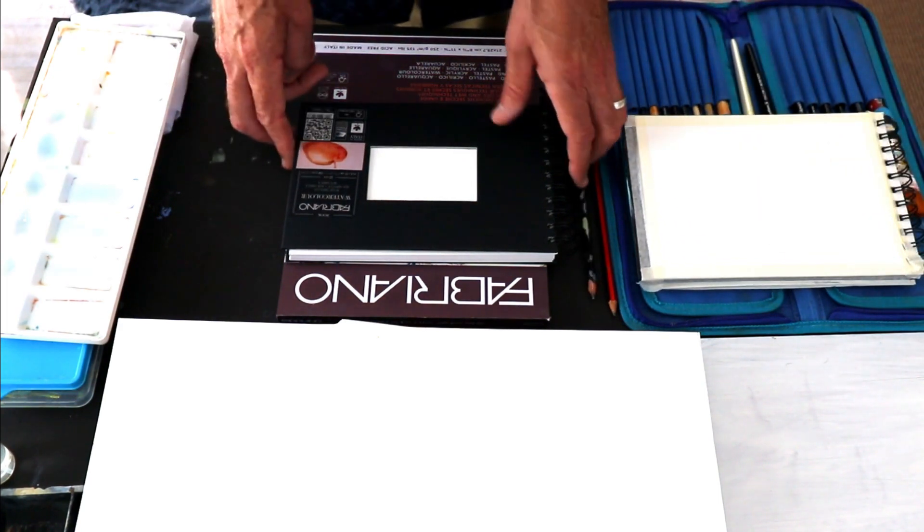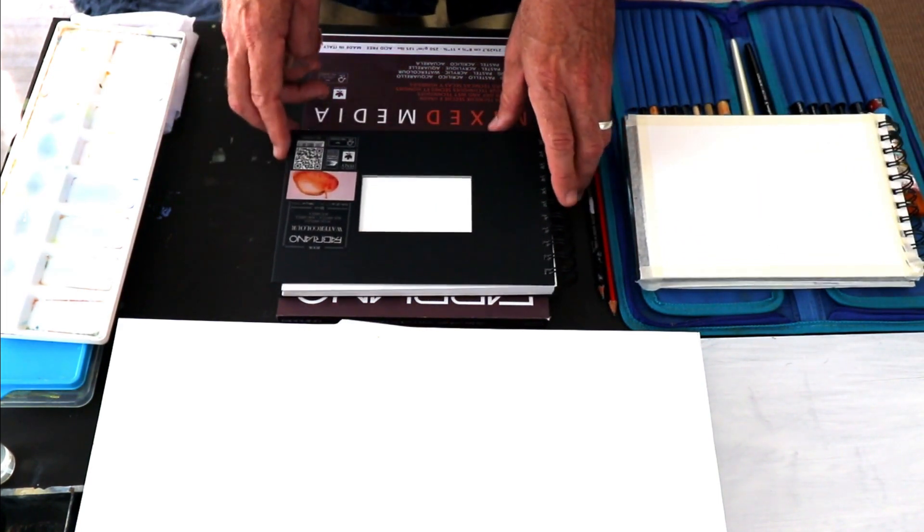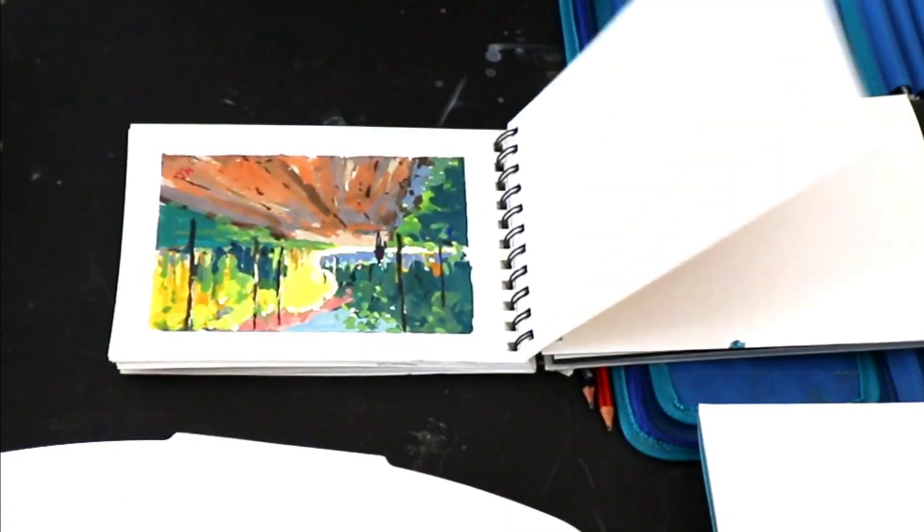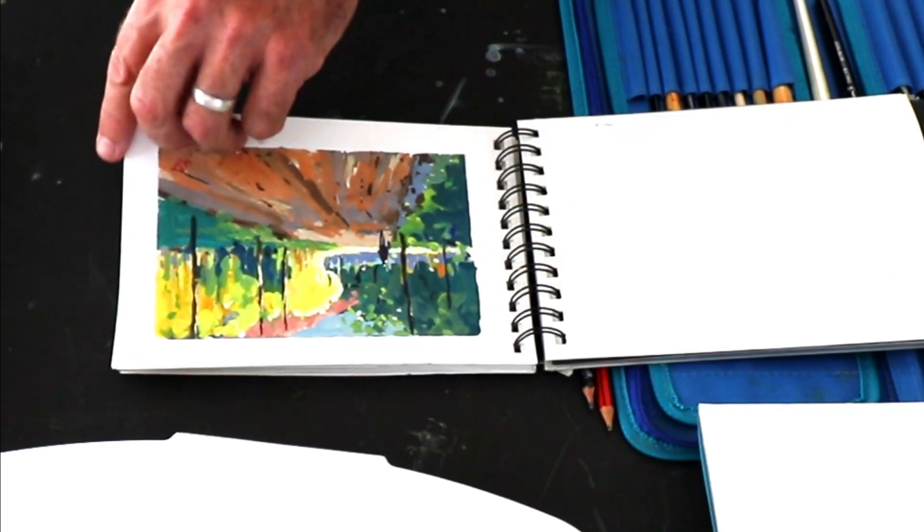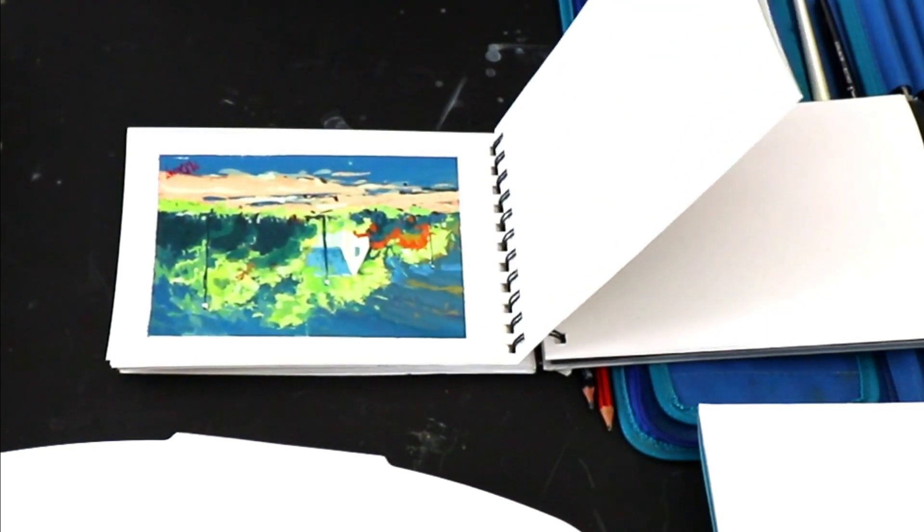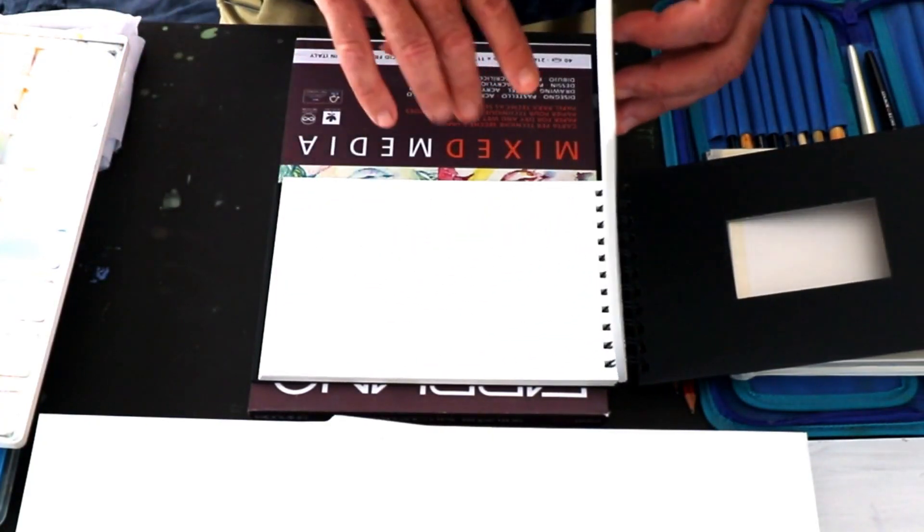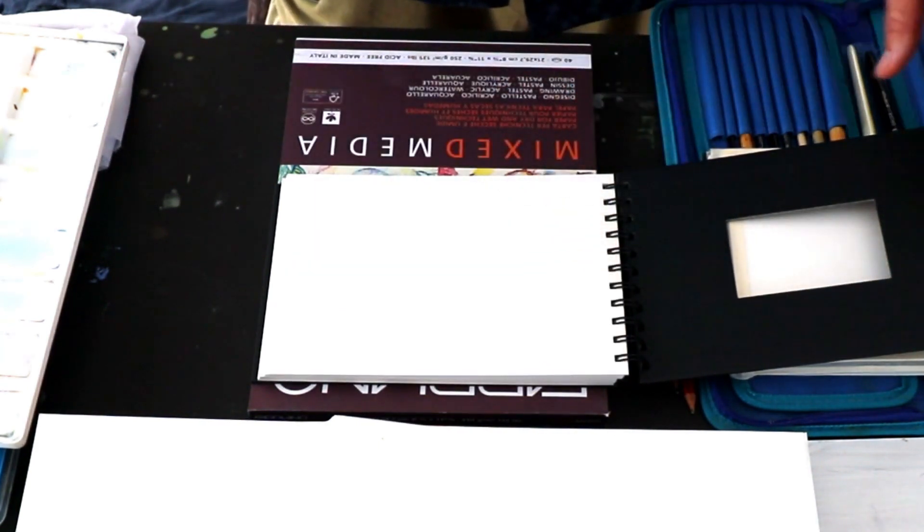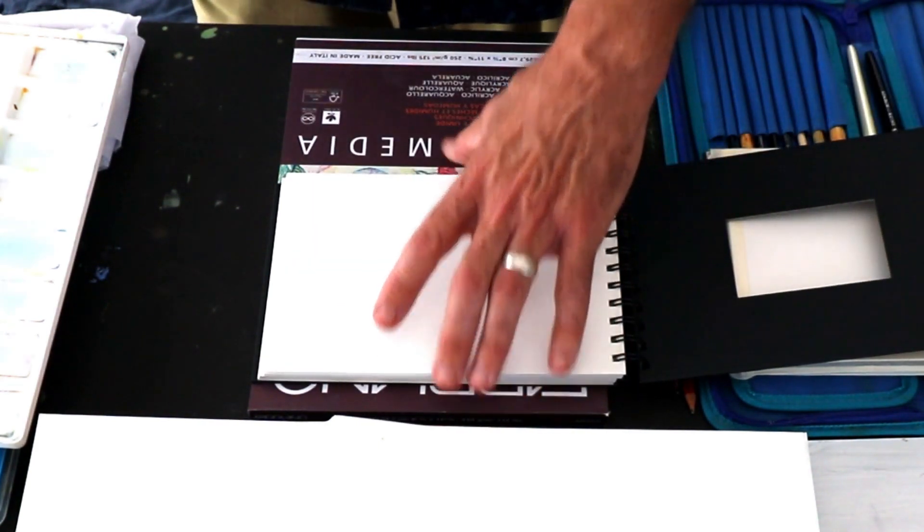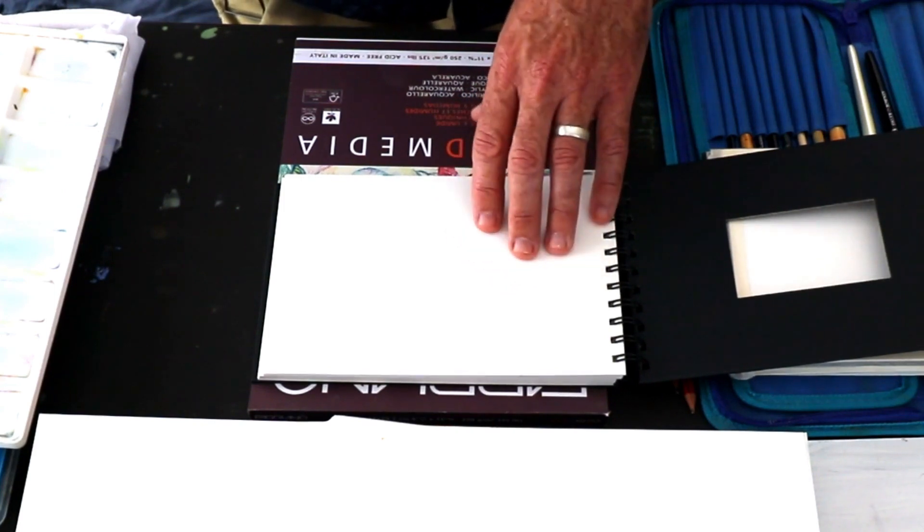But as I said, I like to use paper. And one of my favourite surfaces is this Fabriano 300 gram or 140 pound paper. It comes in the spiral bound book. And I find it really a beautiful collection that you can build up with your sketches and studies.